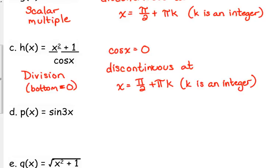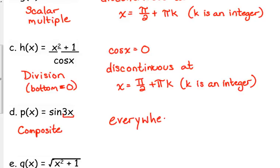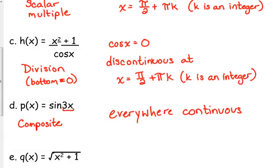Example D: p(x) = sin(3x). Which rule is this? Composite. We are plugging 3x into sin(x). The composite rule says as long as both functions are continuous, the composite will be continuous. 3x is a polynomial — it's continuous everywhere. The outside function sine is also continuous everywhere. So this composite function is everywhere continuous. I always want to write 'everywhere continuous,' though 'continuous everywhere' is fine too.